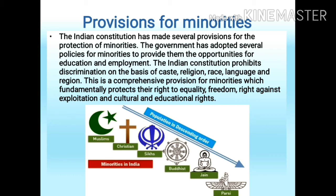The minorities in India in descending order of population are: Muslims, Christians, Sikhs, Buddhists, Jains, and Parsis.